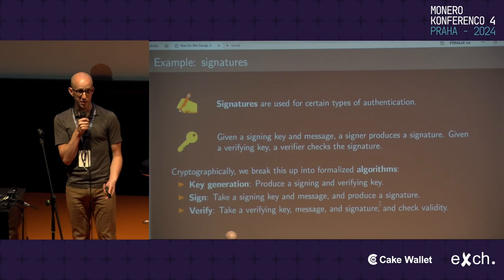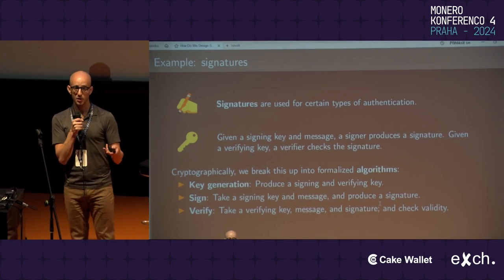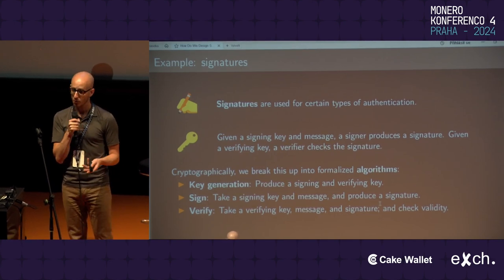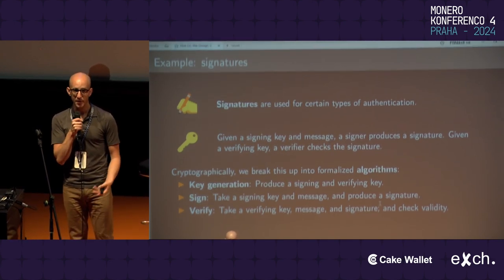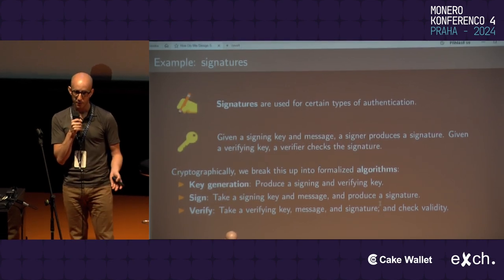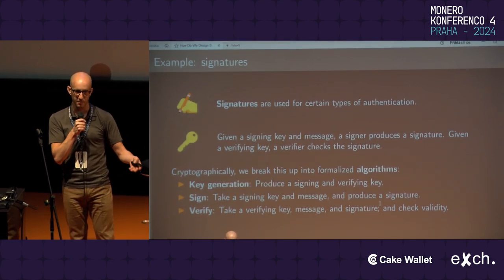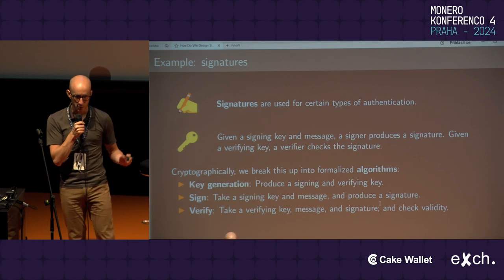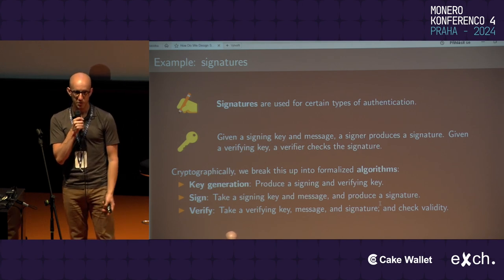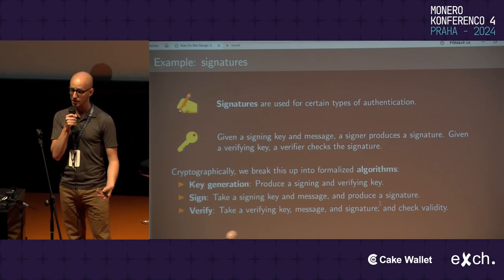Let's give an example, which is a digital signature. A signature scheme is a cryptographic construction used to authenticate messages. These are used very frequently — Monero uses them, Bitcoin uses them. You use them all the time, every time you use your phone, to authenticate messages using keys.